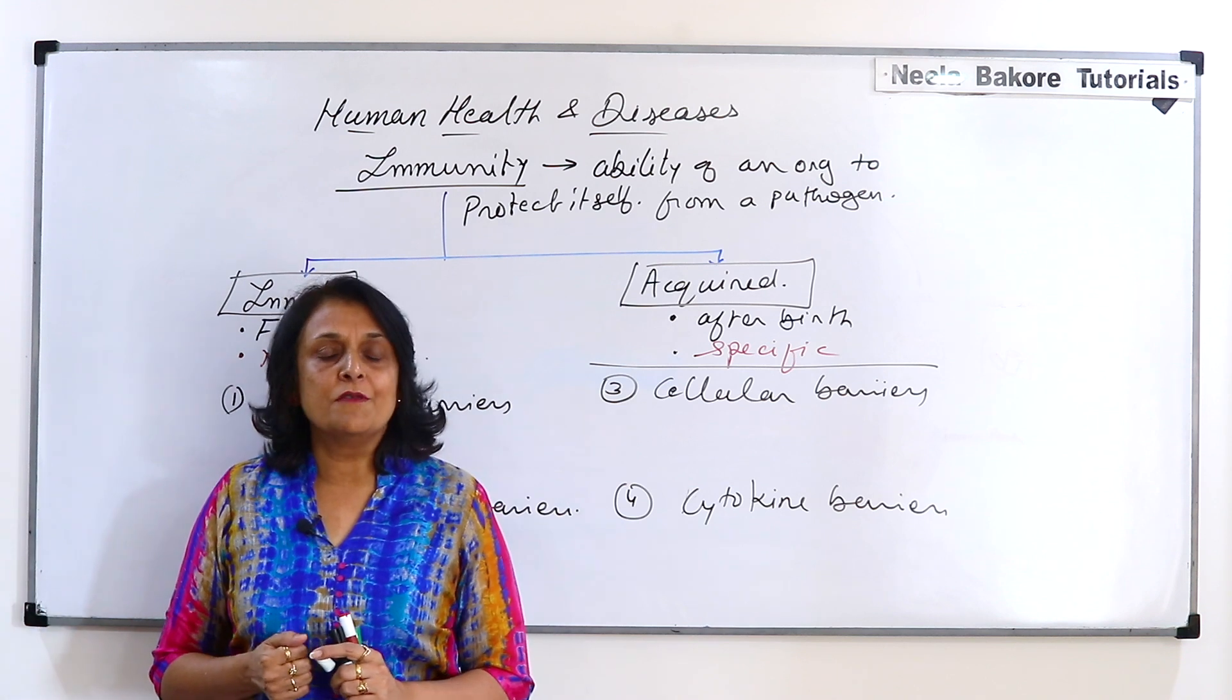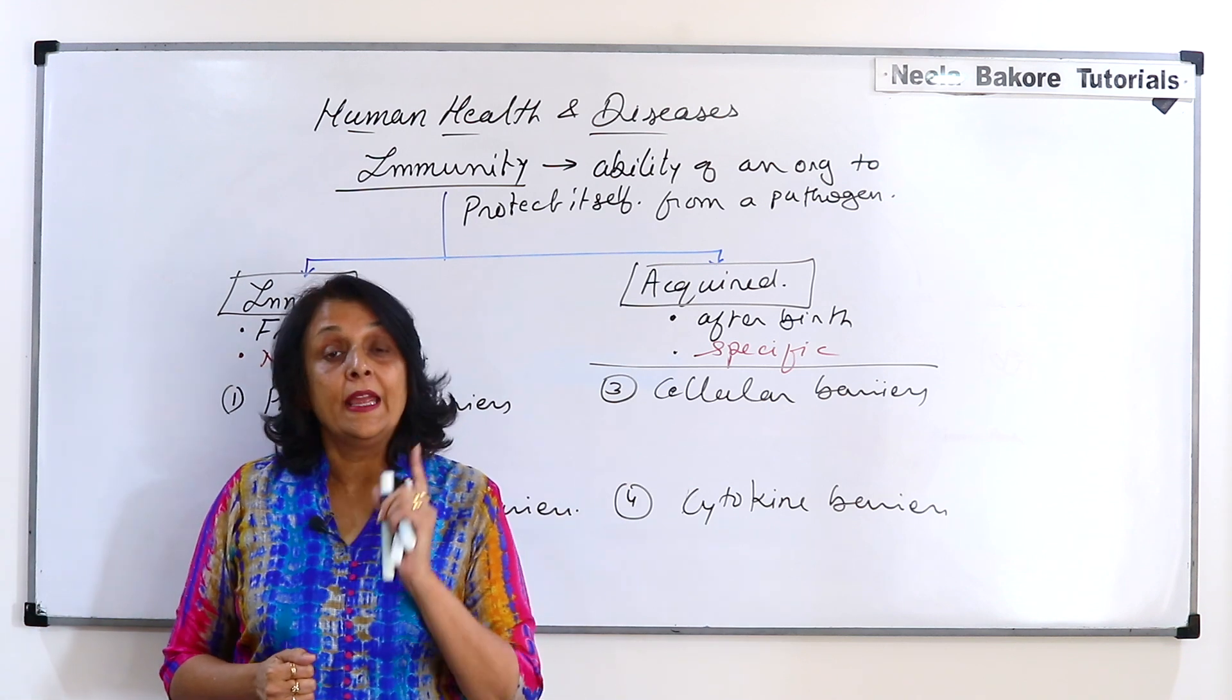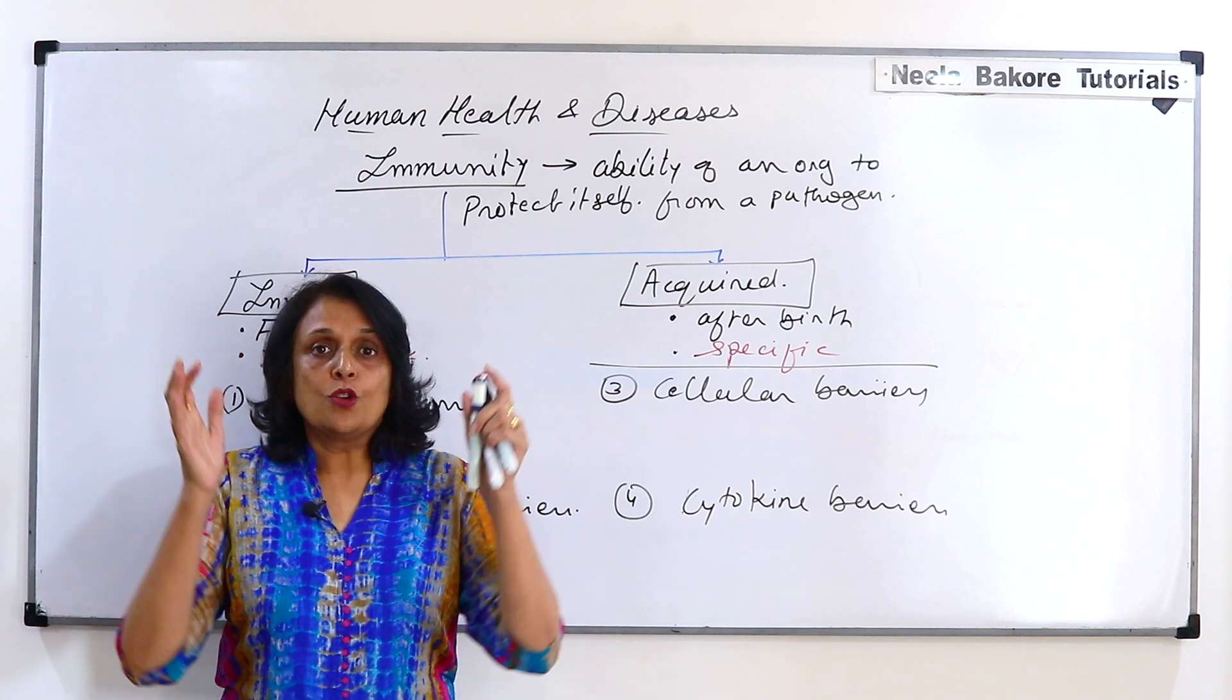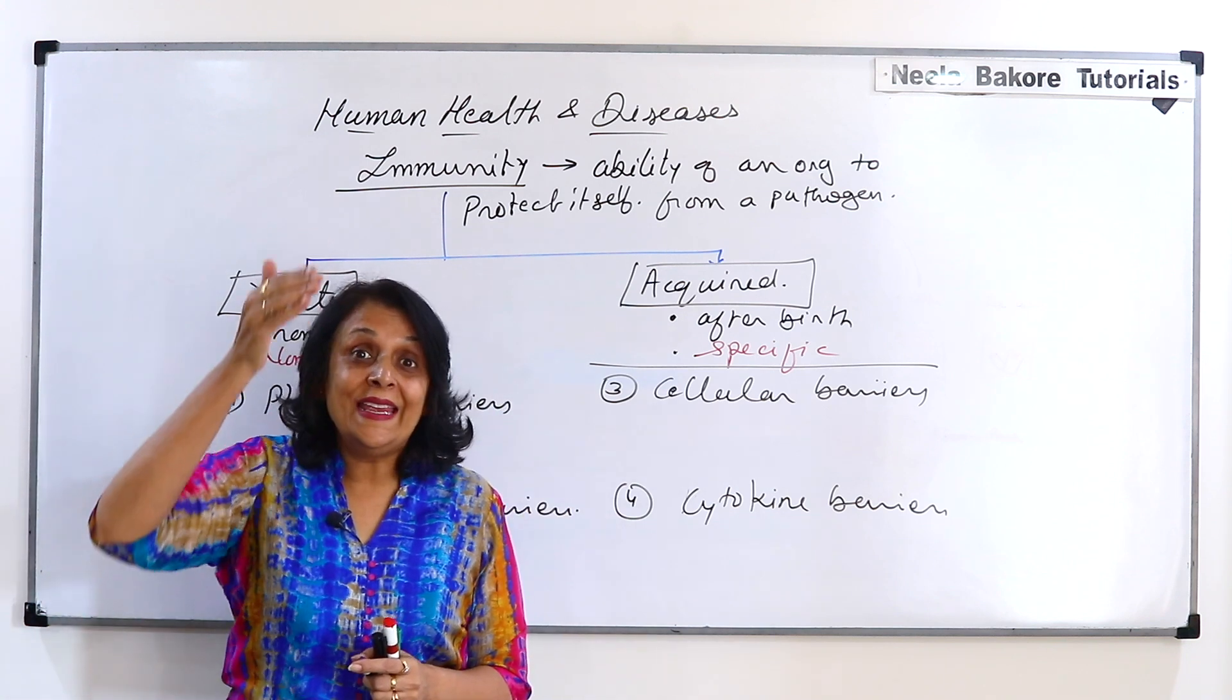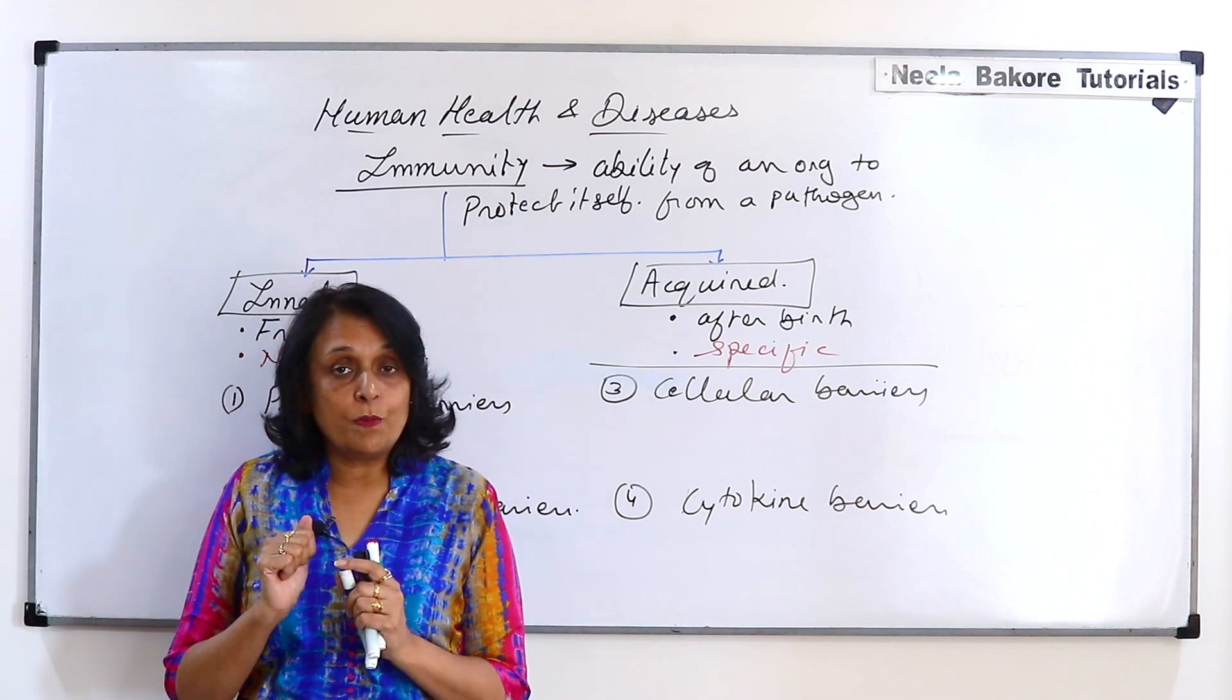Then there is some other mechanism which is going to protect us. But it is a physical barrier. So outside of the body is a barrier. That means on the inner lining also there would be a barrier.